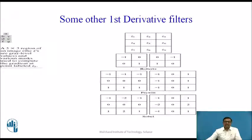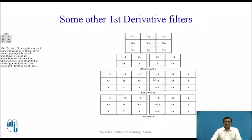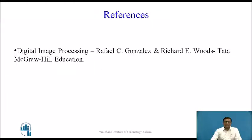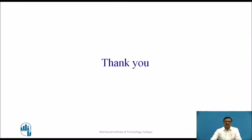Other first derivative filters include the Prewitt filter, where the weight associated with the nearest pixels is 1 (unlike Sobel where it is 2), and the Roberts filter, which gives the gradient in the diagonal direction. This is the nomenclature given to every pixel in a 3×3 image. The book referred for preparing these slides is Digital Image Processing by Rafael C. Gonzalez and Richard E. Woods, published by Tata McGraw-Hill Education. Thank you very much.